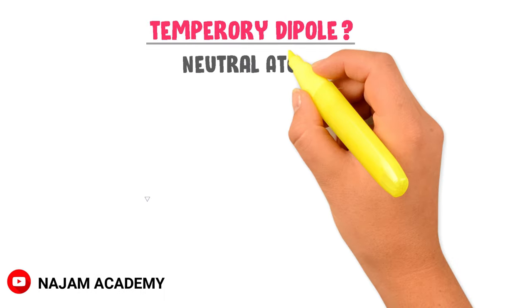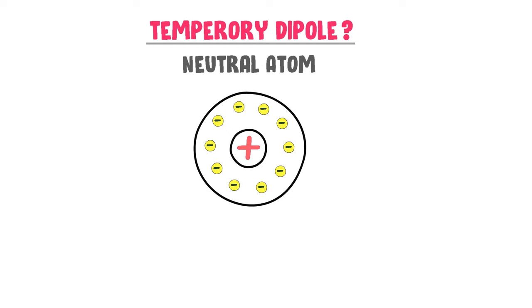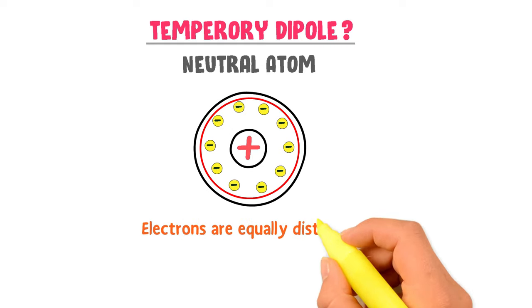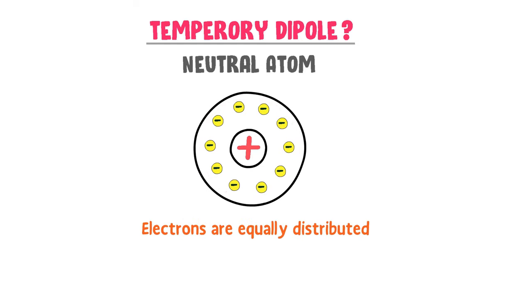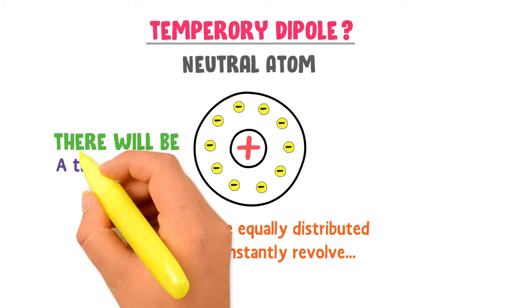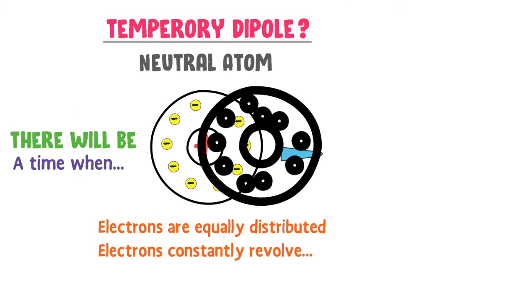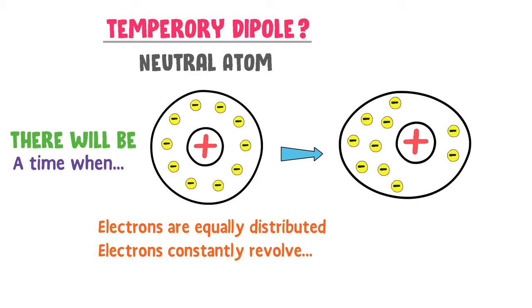Firstly, let me teach you about temporary dipole. Consider a neutral atom. We know that in a neutral atom, electrons are equally distributed. We also know that electrons are constantly revolving around the nucleus. There will be a time when one side of the atom will have more electrons than the other side, and the structure of the atom will be distorted.